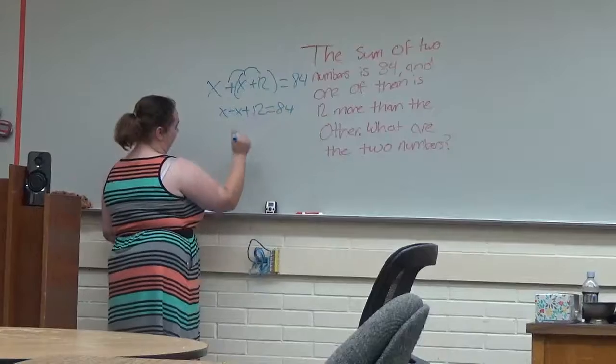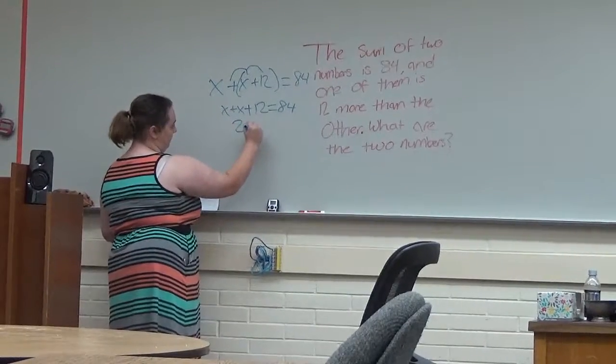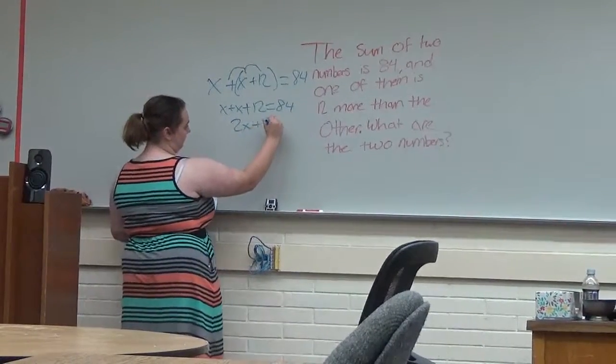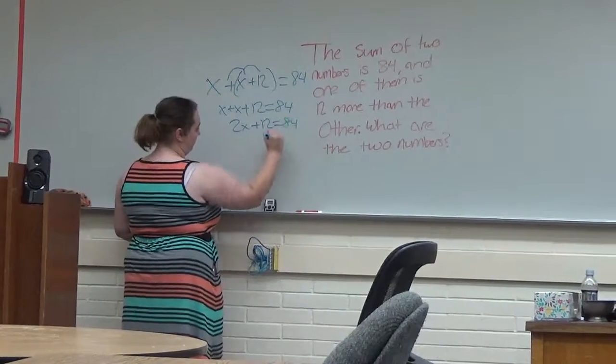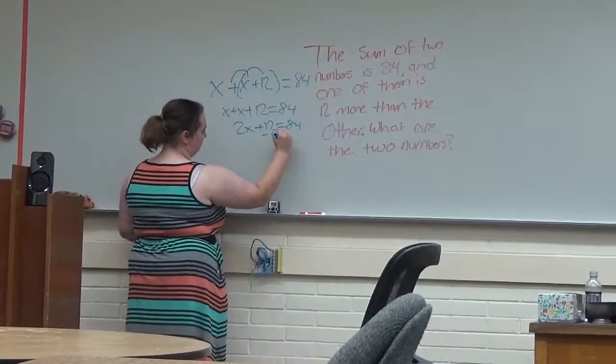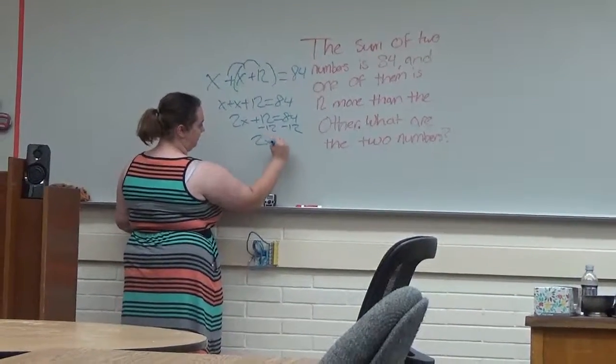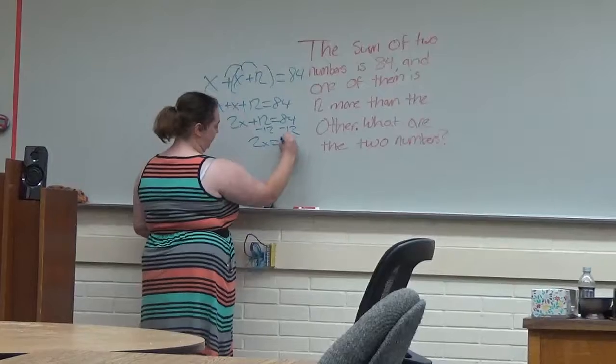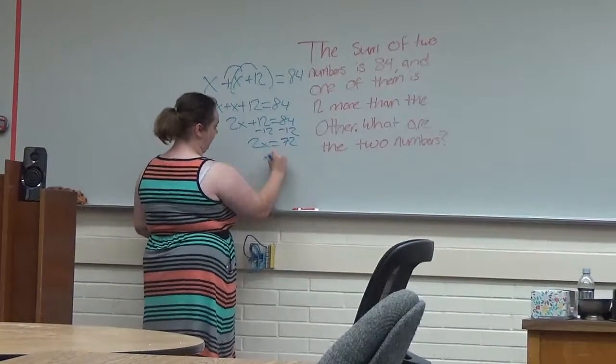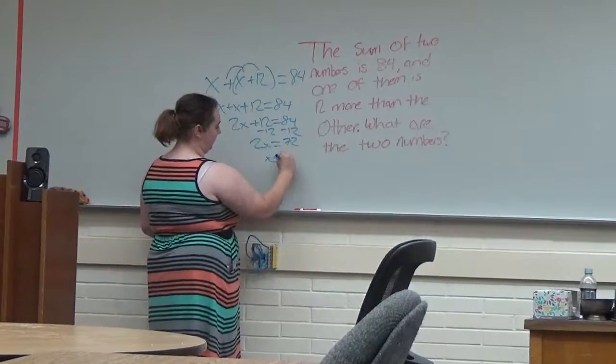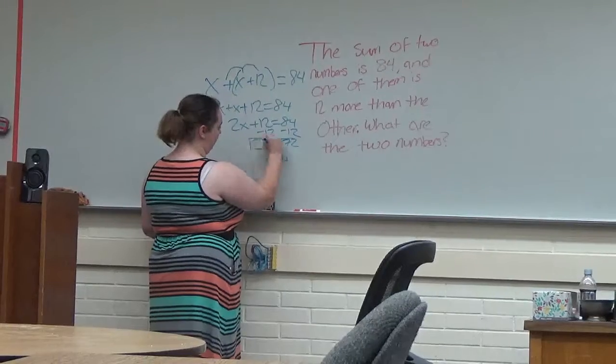And then I would combine that to 2x plus 12 equals 84. And then I would subtract 12. So 2x equals 72. And then x equals 36 because you divide by 2. That makes sense.